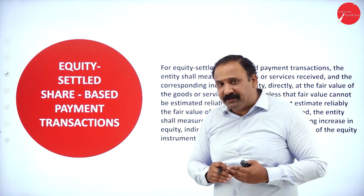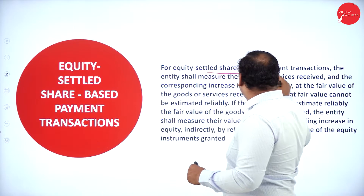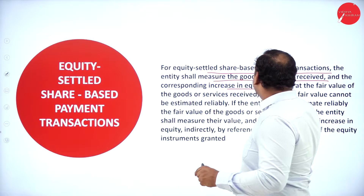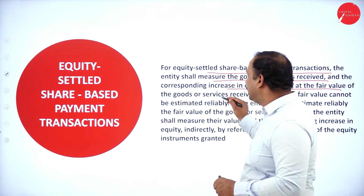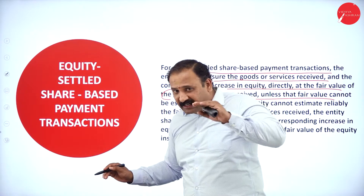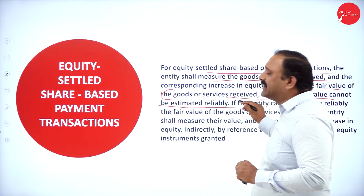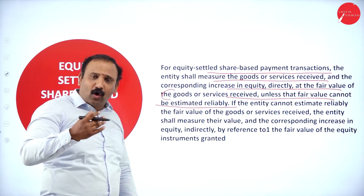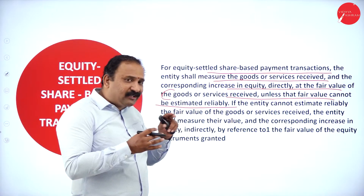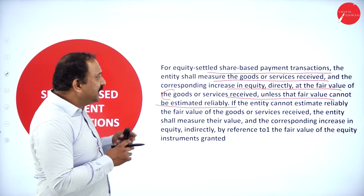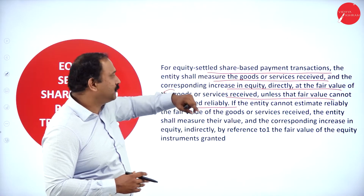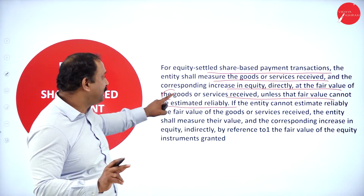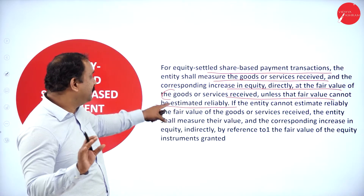For an equity-settled share-based payment transaction, the entity shall measure the goods or services received and the corresponding increase in equity directly at fair value. The goods or services received — unless that fair value can be estimated reliably — have to be estimated. The share-based payment transactions shall measure goods received only when there is an increase in equity value. At the fair value level, goods or services received are measured unless that fair value cannot be estimated reliably.